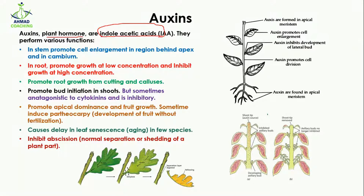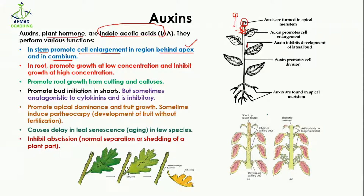Auxins perform various functions in a plant body. In stems, they promote cell enlargement in the region behind the apex and in the cambium. They are formed at the tip of the stem, or apex, and then move downward to increase cell length in that area.